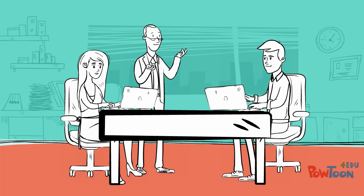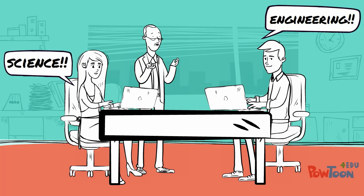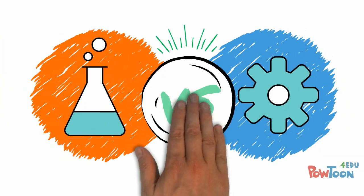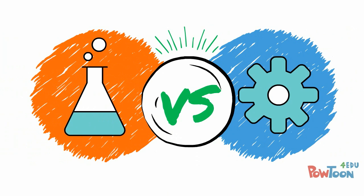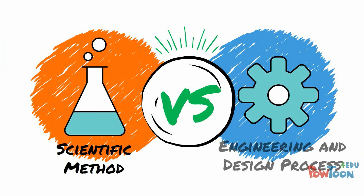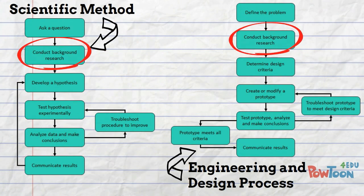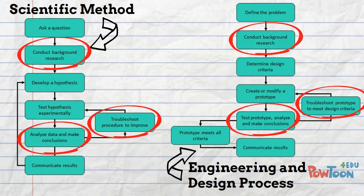It is important to note that scientists often do some engineering, and engineers often do some science. There is a lot of overlap between both types of projects. This is evident when we compare the scientific method with the engineering and design process. For example, both processes involve conducting research after stating the question or defining the problem. They both involve troubleshooting of procedures and methods, collecting and analyzing data, and communicating the results.